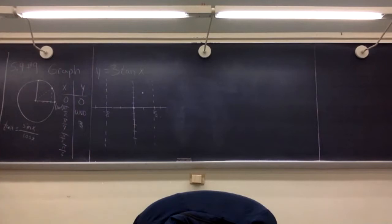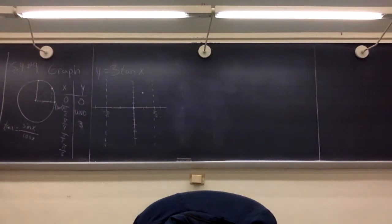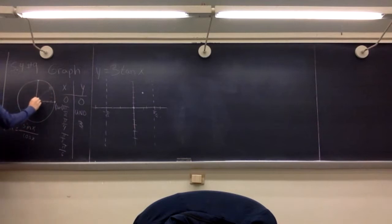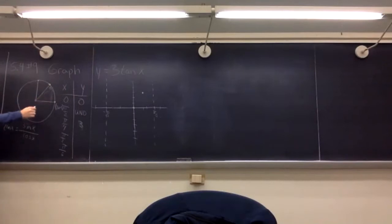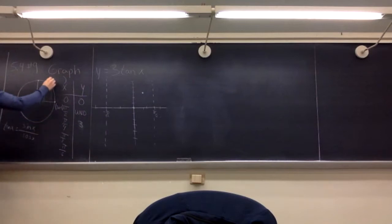At pi over three, the value is going to be a little bit bigger. Do you remember the coordinate pair? Students always mix up pi over six and pi over three. One of them is clearly taller than the other. The height for pi over six is one half, and the height for pi over three is root three over two.